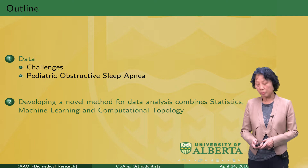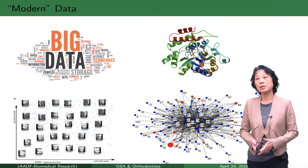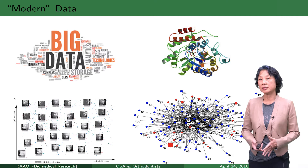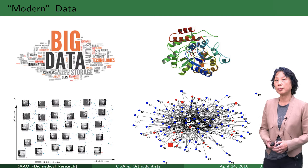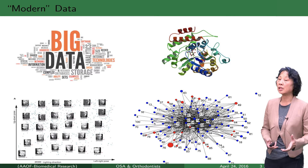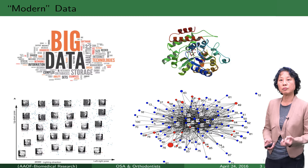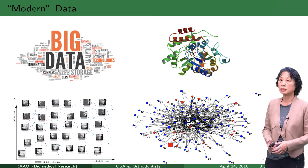Due to high computational power these days, statisticians, computing scientists, and data scientists are capable of looking into very complex data sets. There are many complex data sets, but here are several examples: DNA and RNA sequences, image data — which could be natural images or medical images — and also networks of the brain and social networks.